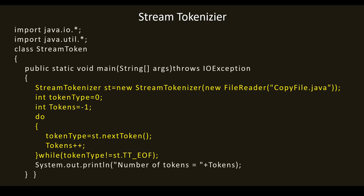You can also use the stream tokenizer for different manipulations, which we will see in another video. After the do-while loop completes, the number of tokens is displayed on the screen — it will be a numeric value like 99 or 102. Hope you understood this video. We will meet in the next video. Thank you.